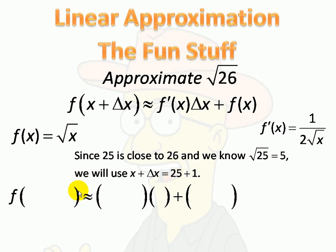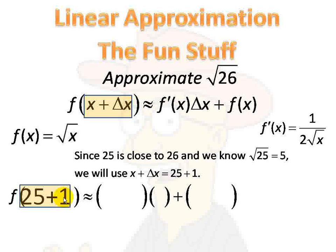Now, notice, here's what we have. We have 25 plus 1, where x, I'm using 25 as my x, and delta x is 1. Now, that adds up to 26. So we're saying this, that the square root of 26 is approximately. Notice, this is the function. F of x is equal to the square root of x.